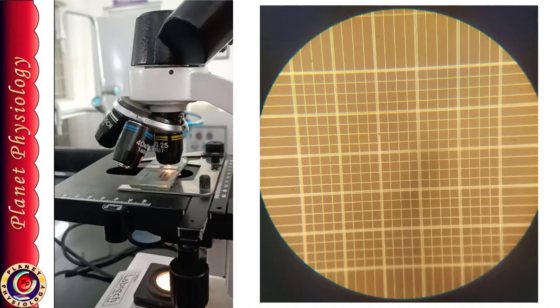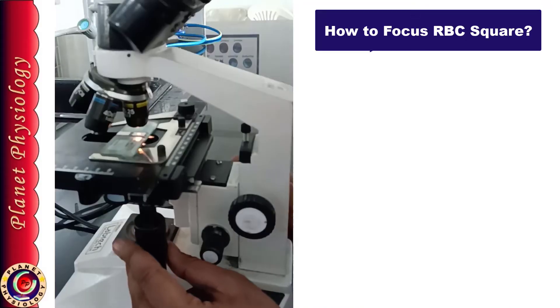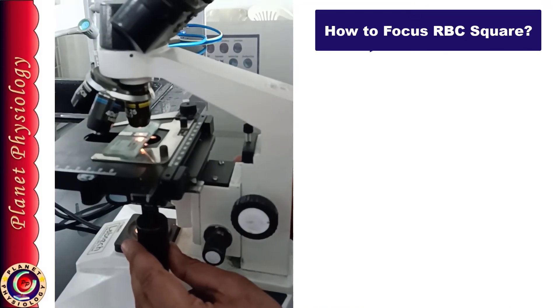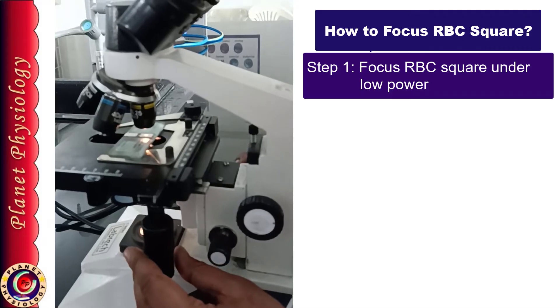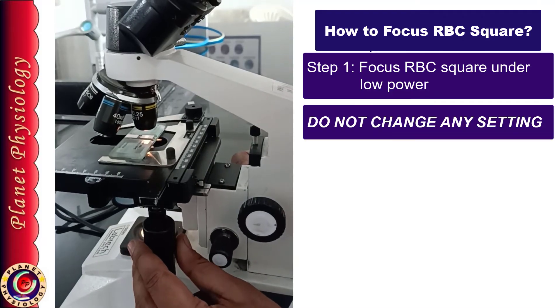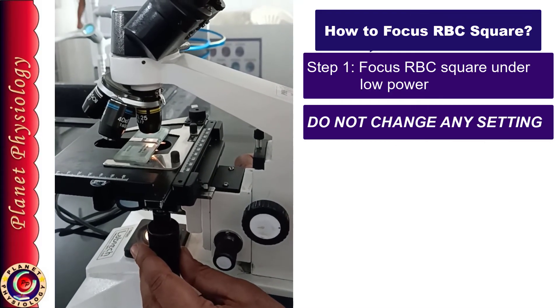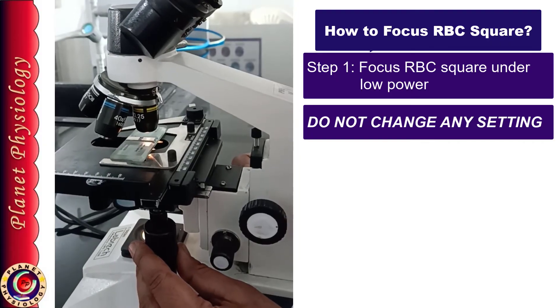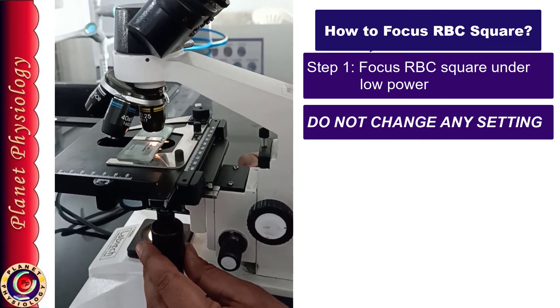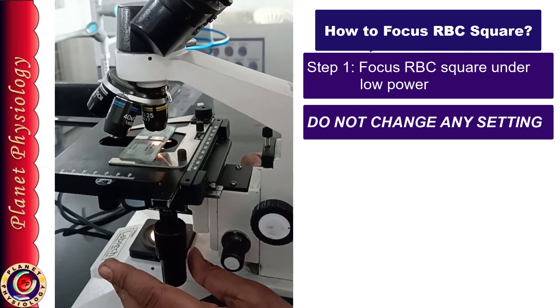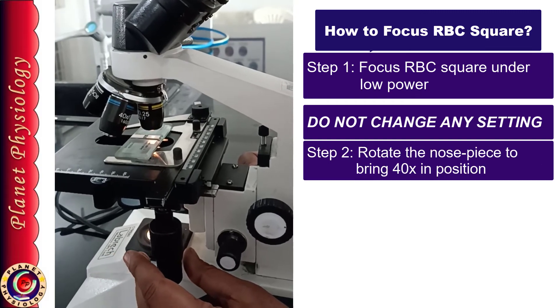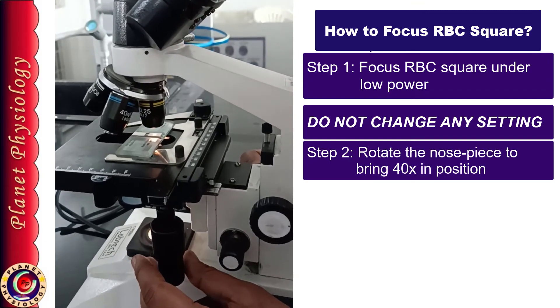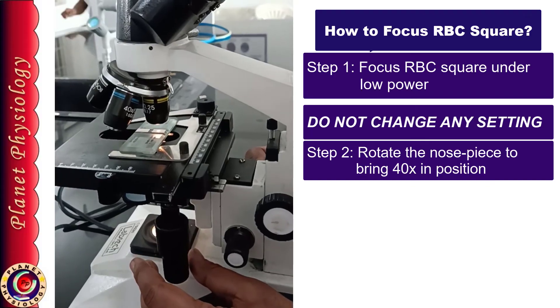This is not to be done. So let us see how is it done ideally. It is job of just few seconds. So once you have focused central RBC square, do not change any setting of the microscope.